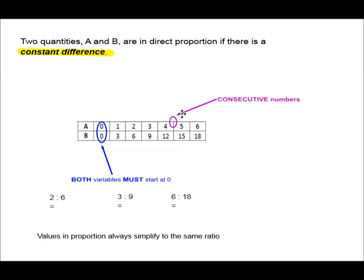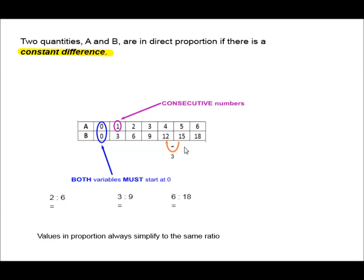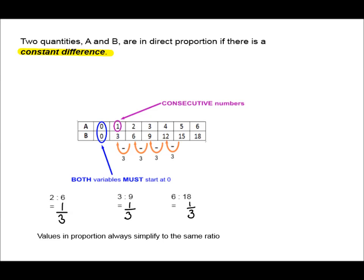The numbers are consecutive and there is a constant difference. For example, 15 minus 3 gives 12, 12 minus 3 gives 9, and 9 minus 3 gives 6. So there is a constant difference of 3, working from right to left. This means 2 to 6 equals one third, 3 to 9 equals one third, and 6 to 18 equals one third. Values in proportion always simplify to the same ratio — in this case, 1 to 3.